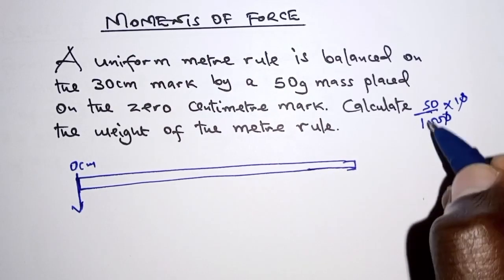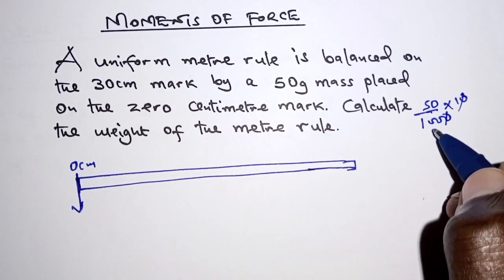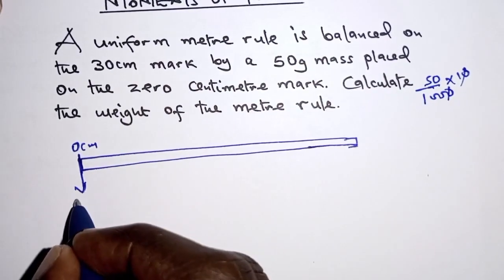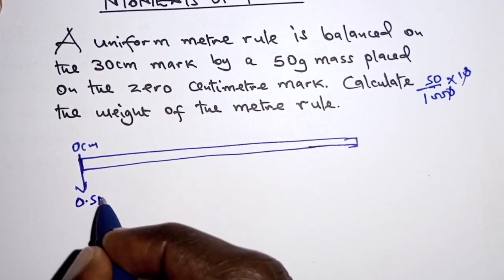So these and these cancel, therefore 50 over 100 is 0.5, so that means we have a force of 0.5 newtons here.